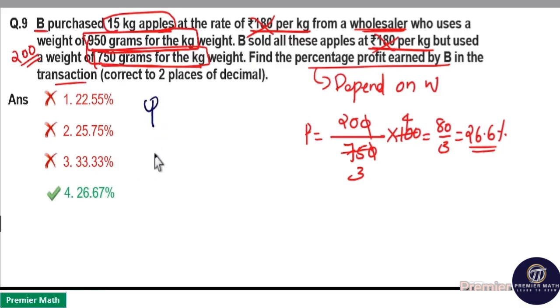You can also do this using cost price and selling price ratio. Cost price means he paid total 15 kilogram apple price. So what he cost is 15 kilogram apple price. But instead of 1 kilogram he only got 950 grams. 950 grams means 0.95 kilograms.